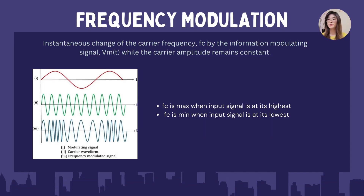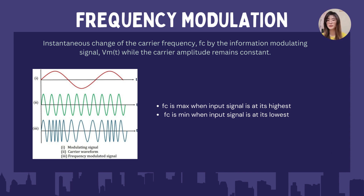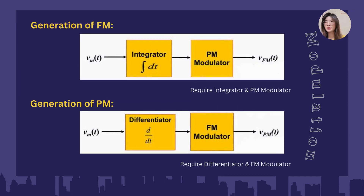Now I'm going to explain more details about frequency modulation. Frequency modulation is an instantaneous change of the carrier frequency fc by the information of the modulating signal Vm(t), while the carrier amplitude remains constant. From this diagram, you can see the first one is the modulating signal, the second is the carrier waveform, and the last is the frequency modulated signal. This means that the carrier frequency fc is maximum when the input signal is at its highest, while fc is minimum when the input signal is at its lowest.